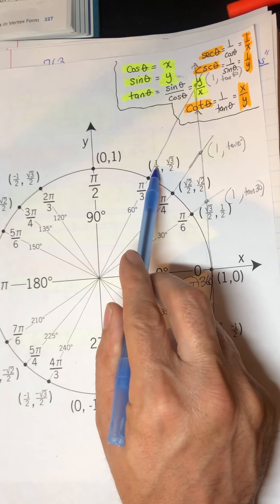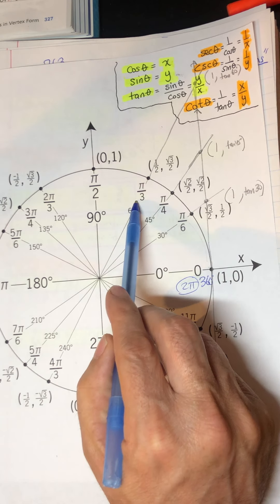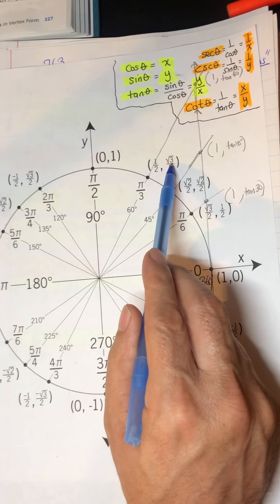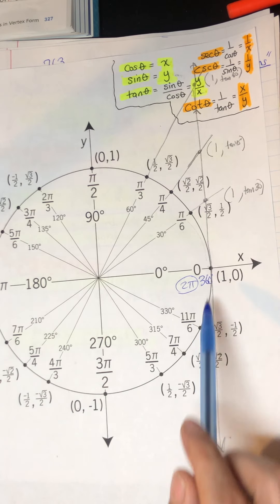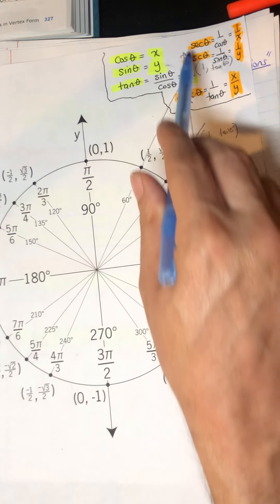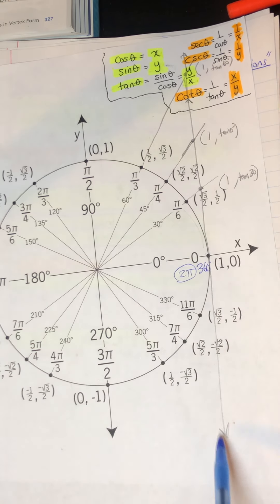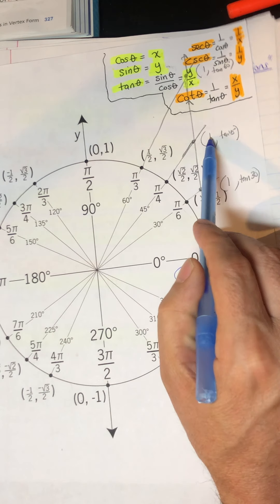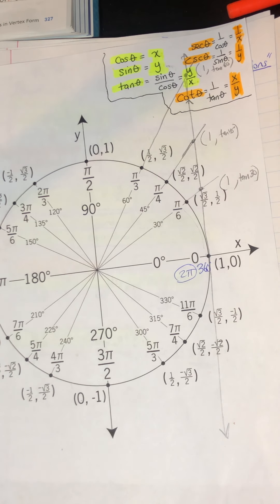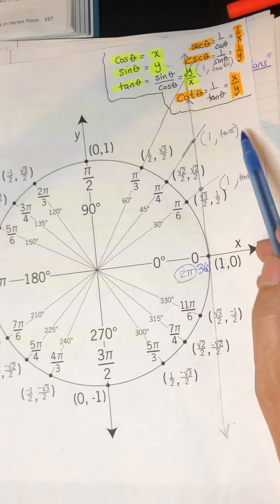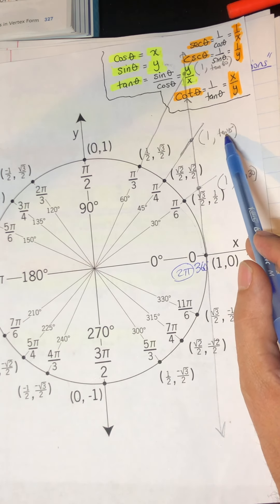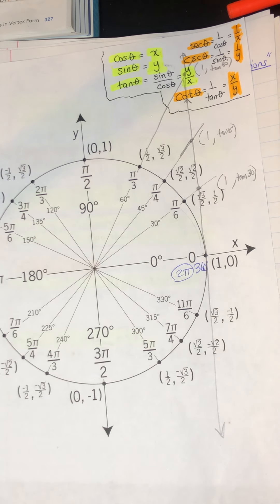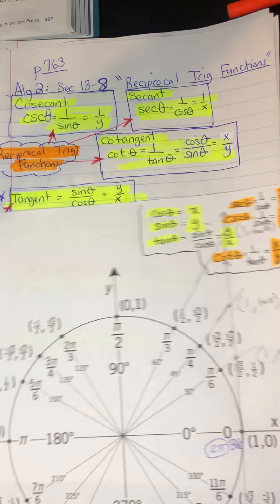The x-coordinate would be the cosine of 60 degrees, and the sine of 60 degrees would be the y-coordinate. Tangent is the y-coordinate of the line tangent to the unit circle, which is x equals 1. Since the x-coordinate is always 1 on that tangent line, to find the tangent of 45 degrees you'd use a calculator in radian mode.